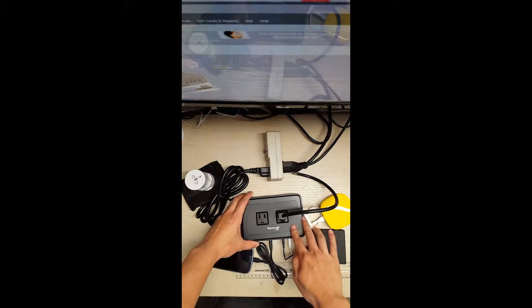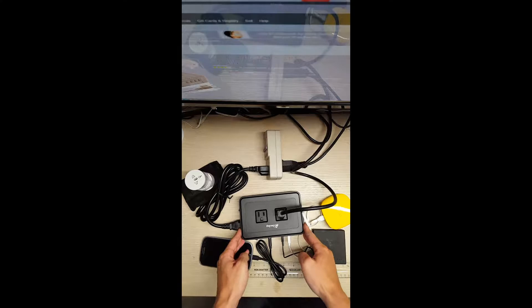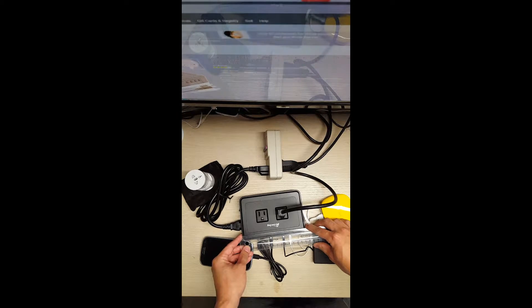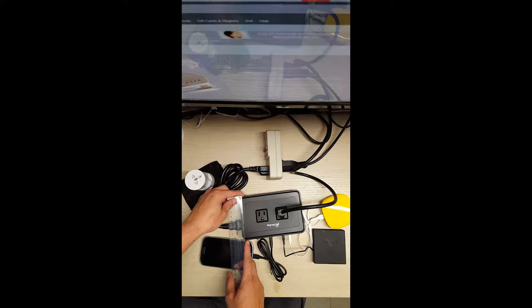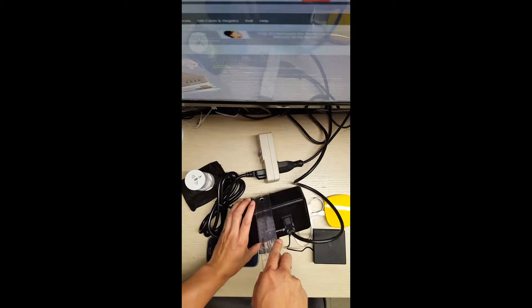So first I'm going to review this. It's the HiLucky power surge protector. It's around 6 inches in length, 4 inches in width, and 1.75 inches in depth.